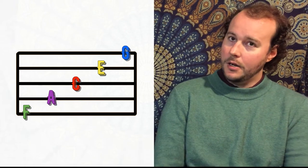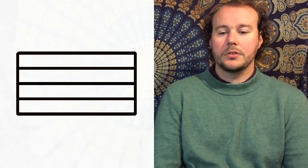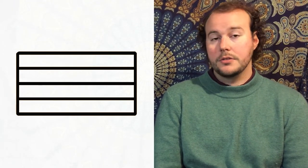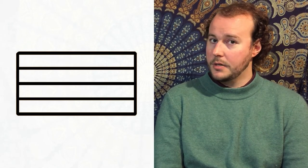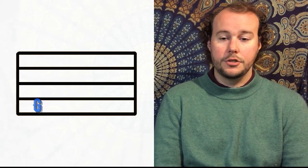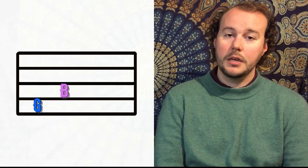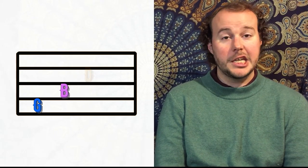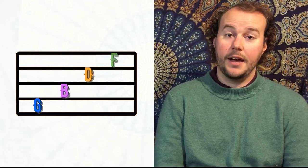If we erase that on the staff, then we're going to talk about the spaces. So as I said, there's four spaces. The bottom space is G. The next space up is B. The next space up is D. And the next space up is F.